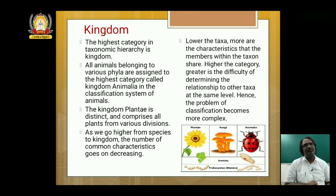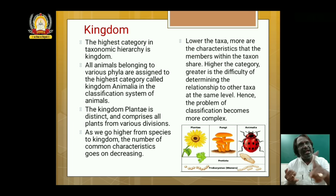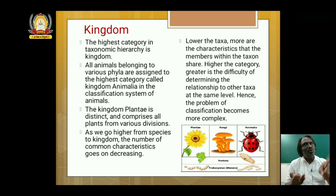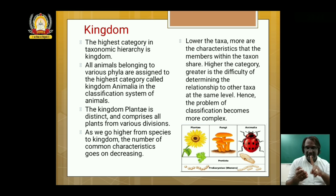There are five kingdoms, classified based on different characters: Kingdom Monera including prokaryotic organisms; Kingdom Protista consisting of unicellular eukaryotic organisms like protozoans, amoeba, paramecium and euglena; Kingdom Fungi or Mycota consisting of yeast and mushrooms; Kingdom Plantae consisting of plants; and Kingdom Animalia consisting of animals.